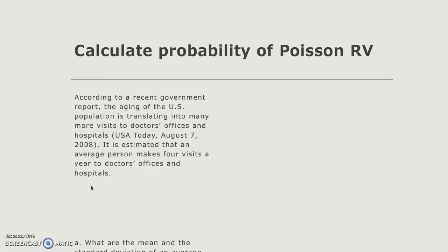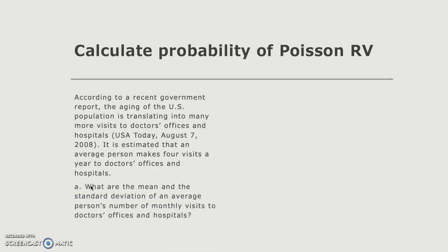Now, the first question: what are the mean and the standard deviation of an average person's number of monthly visits to doctors' offices and hospitals? We know that to find the mean value of a random variable x in Poisson probability distribution is just the number of successes for each interval. So the mean, the expected value, is just the number of successes.